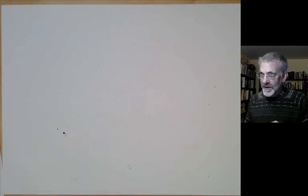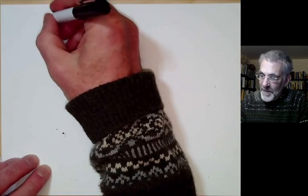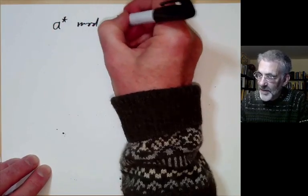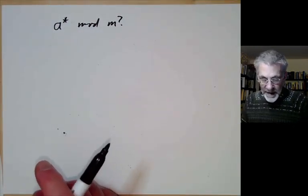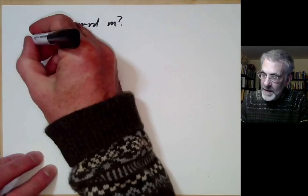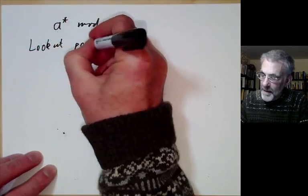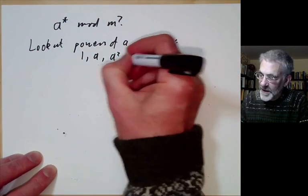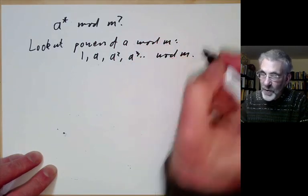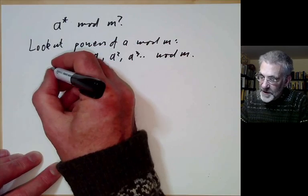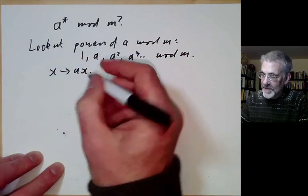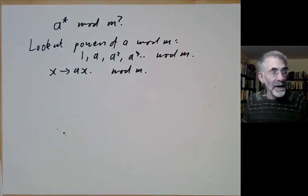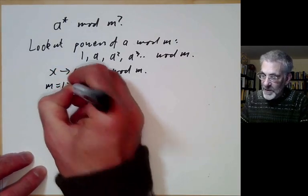Now we look at Euler's generalisation of Fermat's theorem. We want to understand what a to the power of something is modulo m. So let's look at powers of a modulo m — that is, 1, a, a squared, a cubed and so on. More generally, we look at the function taking x to a times x modulo m. Let's take m equals 12 and see what's going on.